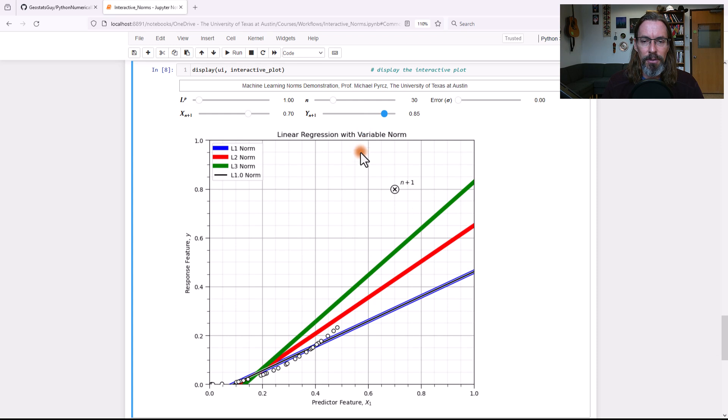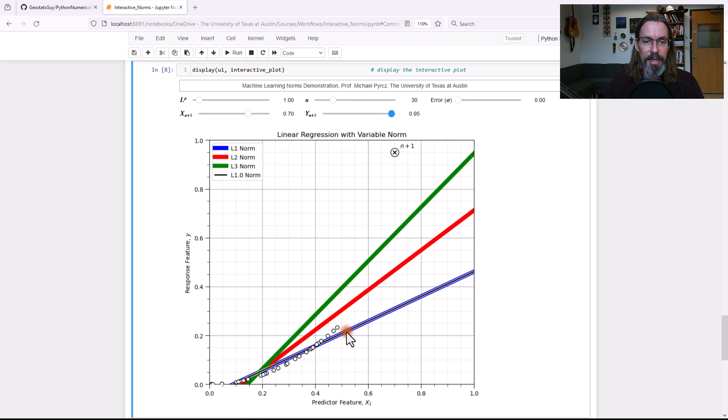Let's go ahead and keep increasing, amplifying this outlier all the way up to the top here. And now we can see a nice spread between our solutions. Now let's go ahead and change our norms and just observe and watch what happens.